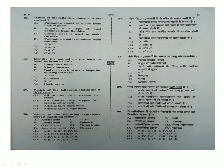Next question: Which of the following statements are correct? Pashmina shawl is made from hair of goat — correct. Angora is a type of wool obtained from the rabbit — correct. Camel wool is used to make carpet. Pashmina wool is obtained from rabbit — incorrect. So A and B are the correct options.